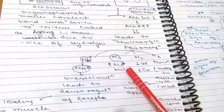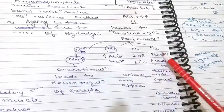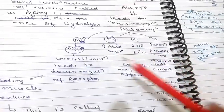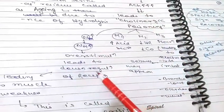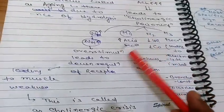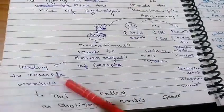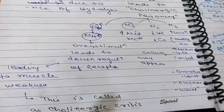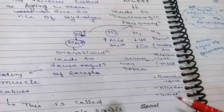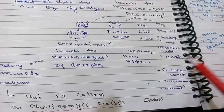If NM receptors are over-stimulated, there will be down-regulation of receptors leading to muscle weakness — this is called cholinergic crisis. Due to excess acetylcholine, overestimation of NM receptors leads to internalization or down-regulation, causing muscle weakness and cholinergic crisis. M3 stimulation also causes bronchoconstriction and diarrhea. There may also be electrolyte imbalance and seizures. These symptoms may appear in persons who have taken insecticides or nerve gases.